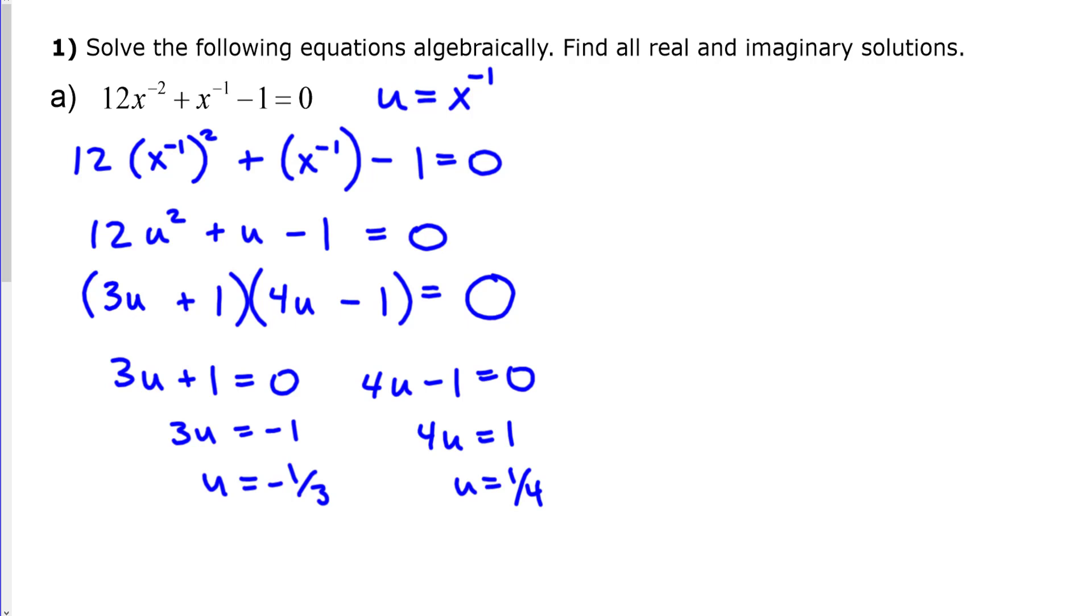Now, to finish this problem, I'm going to come over here. So, I had u equals negative 1 third and u equals 1 fourth. I need to substitute back in for x. And I know that u is equal to x to the negative 1 power. So, that means x to the negative 1 equals negative 1 third. And x to the negative 1 equals 1 fourth.